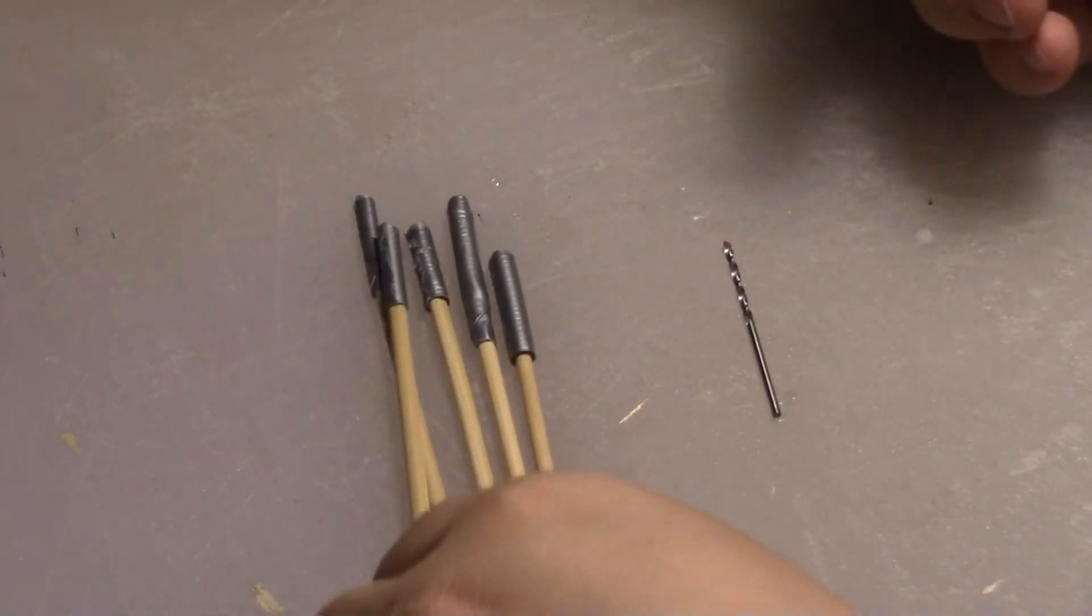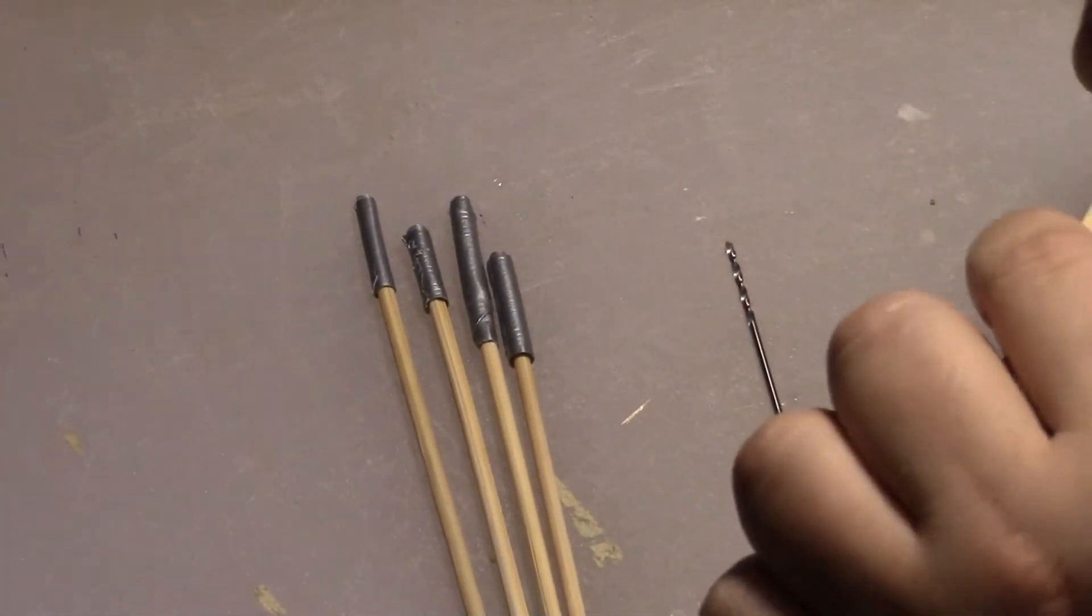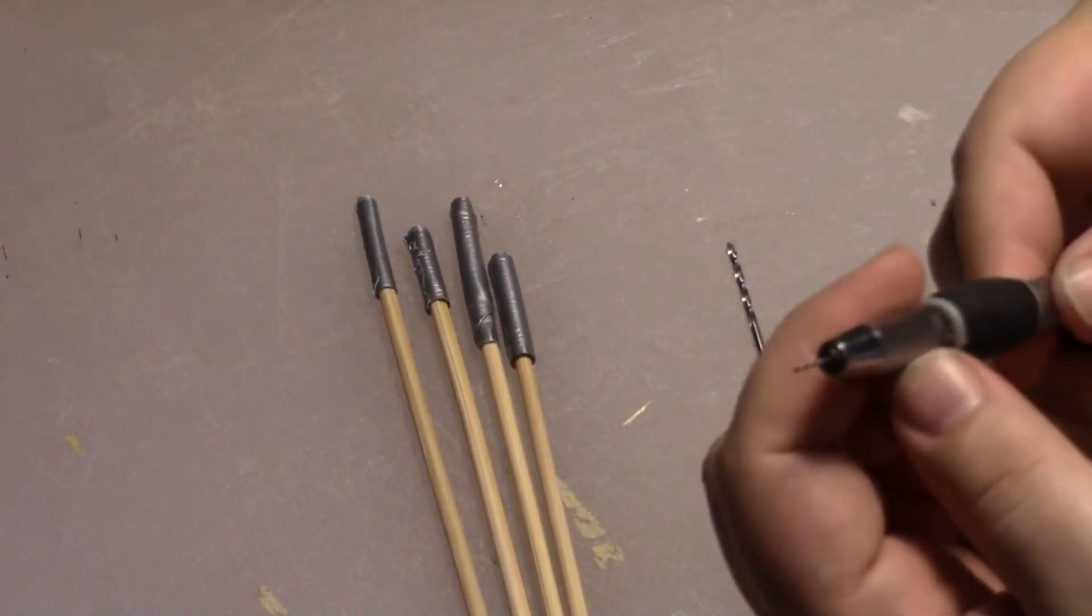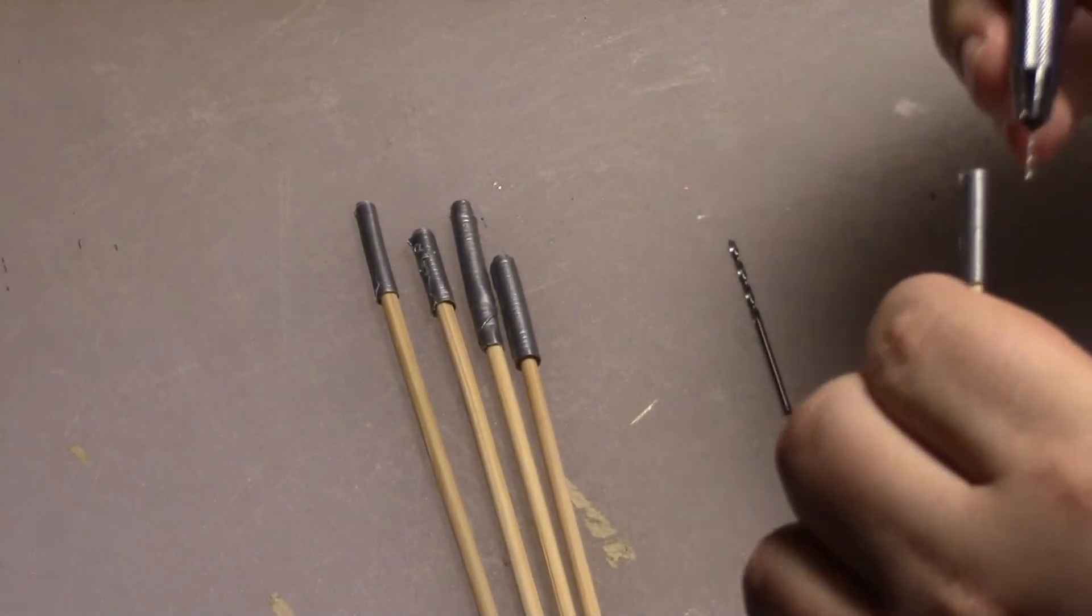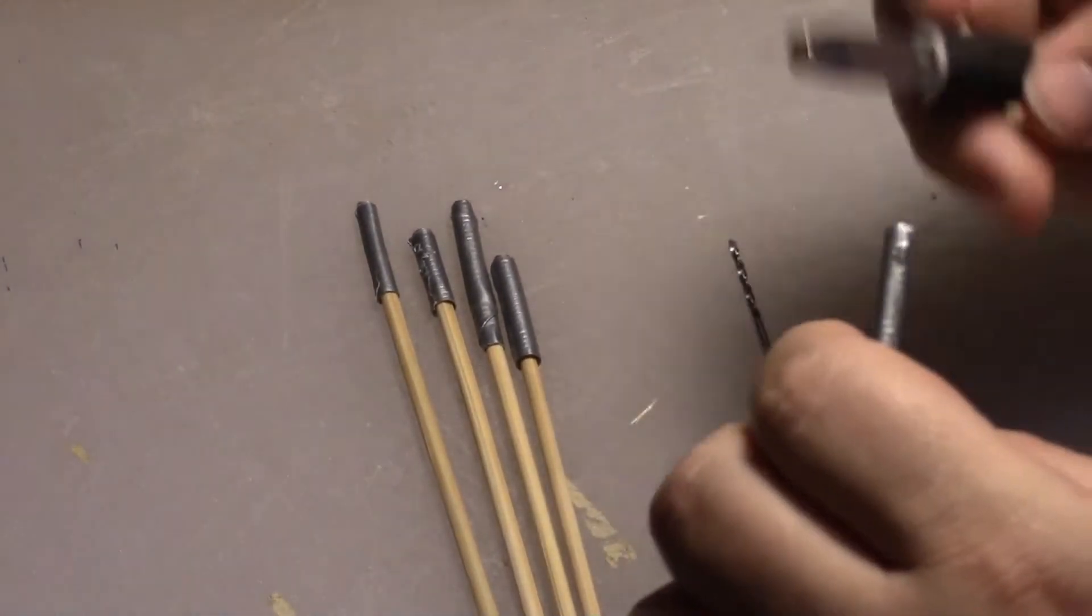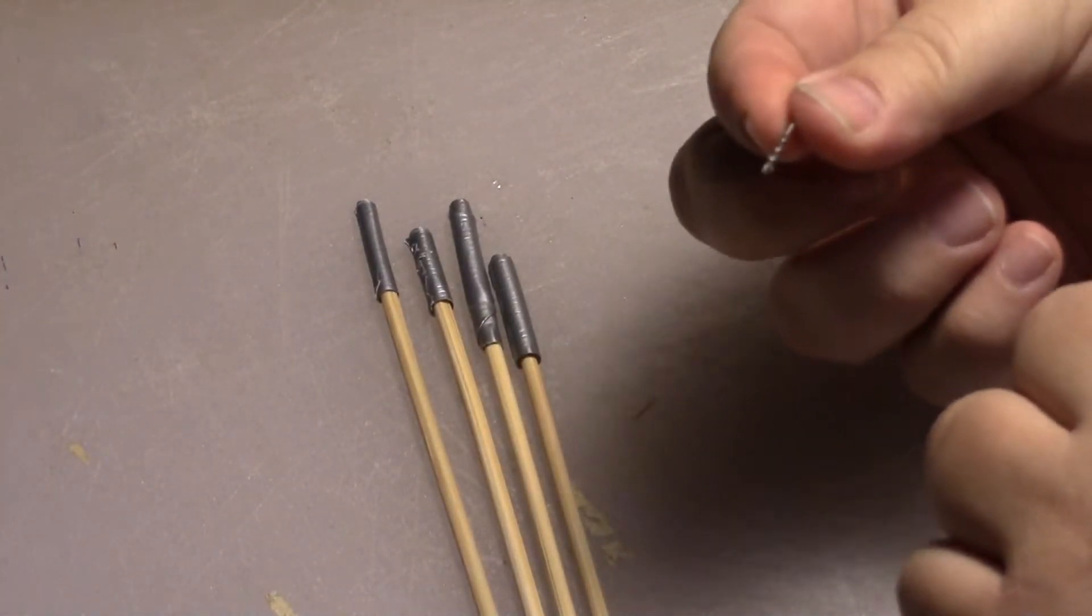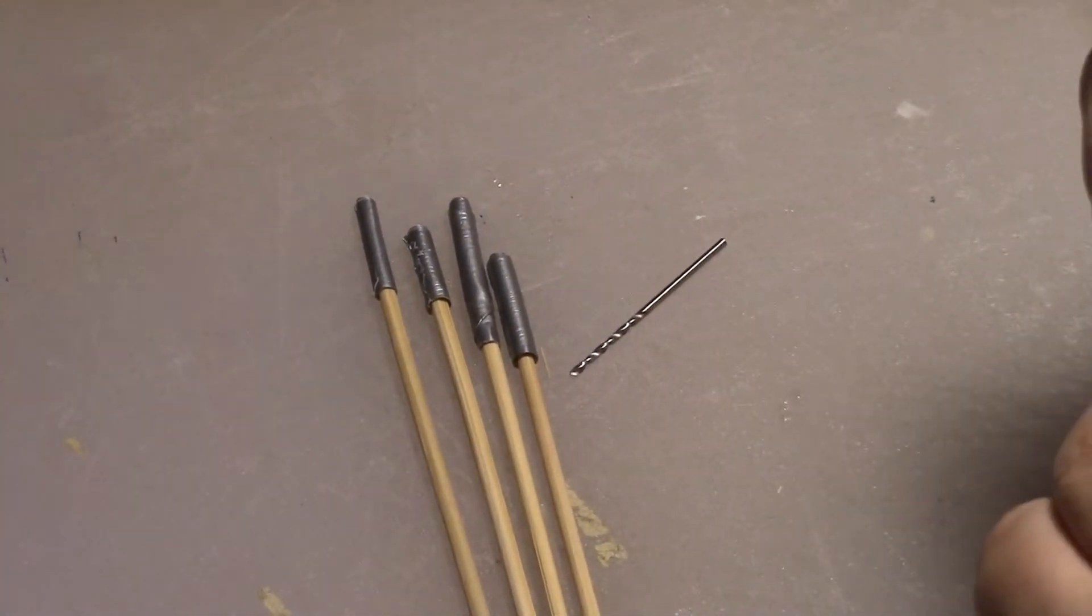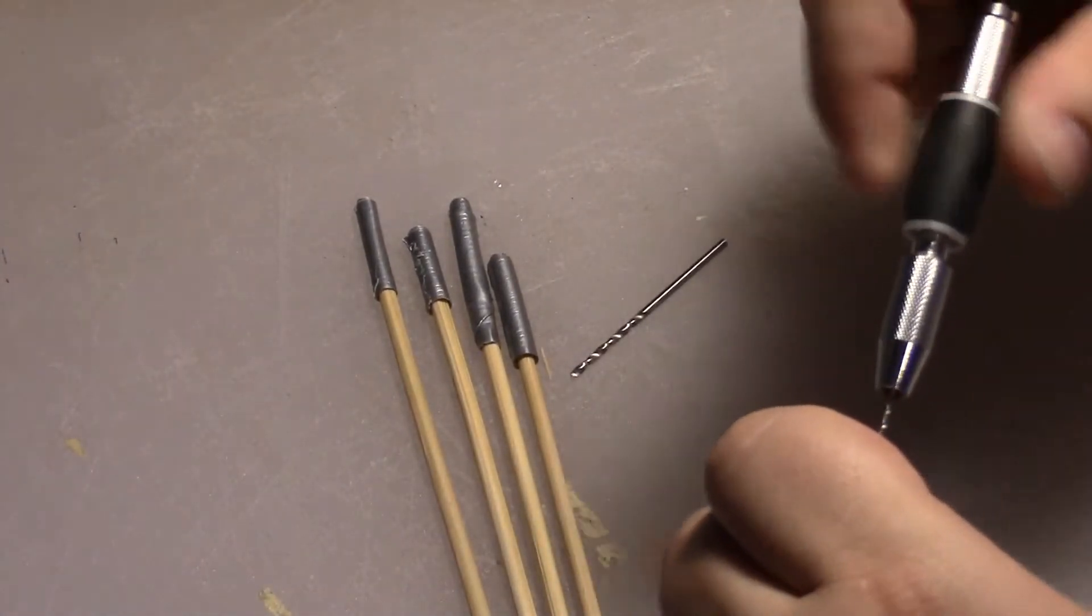Okay, so the next thing we need to do is drill the tops of the shish kebab skewers in order to mount the clips. So what I'm doing is I'm taking a pin vise with a small drill bit, about a one millimeter drill bit, and I'm going to go into the top of the shish kebab skewer. I'm going to start with the small drill bit and then move up to a two millimeter drill bit. Starting small and working your way up also helps prevent the skewer from splitting.